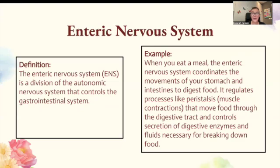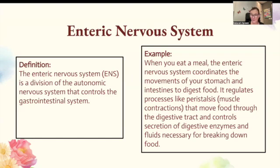The enteric nervous system is a division of the autonomic nervous system that controls the gastrointestinal system. When you eat a meal, the enteric nervous system coordinates the movements of your stomach and intestines to digest the food. It regulates processes like peristalsis — muscle contractions that move food through the digestive tract — and controls the secretion of digestive enzymes and fluids necessary for breaking down food.